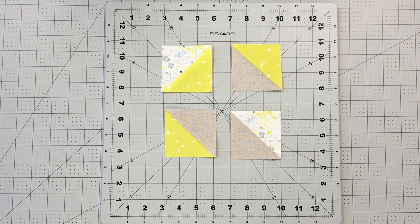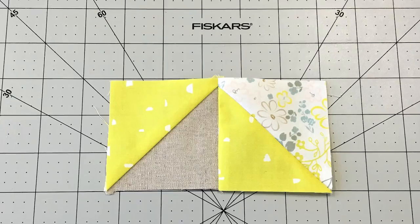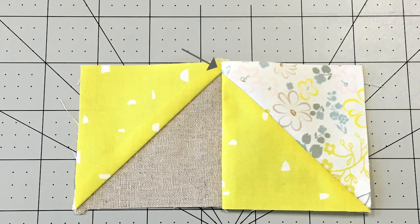When you are sewing half square triangles together where the diagonals meet each other, make sure seams are pressed to alternate sides so seams are able to nest and you will create a perfect point.